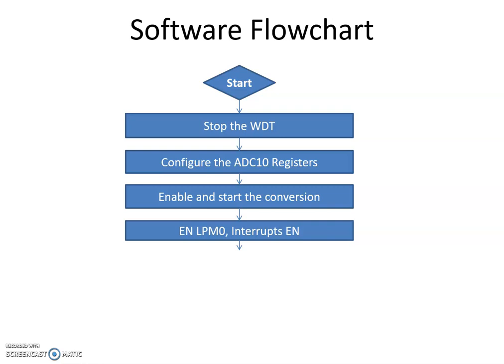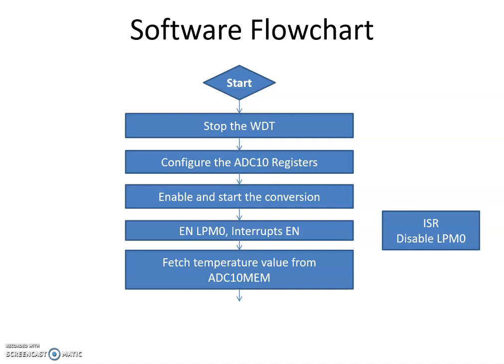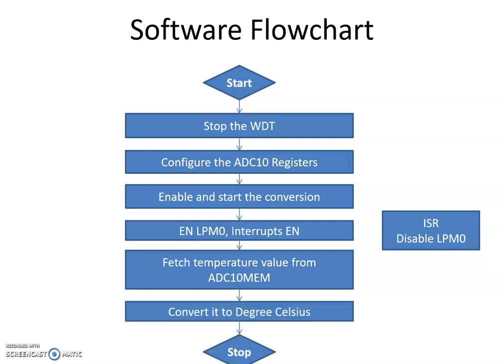Once you enable the interrupt, after the value is written into the ADC10 MEM register, the ADC interrupts your controller and you go to the ISR. Within the ISR we are not doing anything except disabling the low power mode. All calculations should be kept in the main program — you should not put much in the ISR. Simply fetch the temperature value from the ADC10 MEM register, convert it into degrees Celsius, and that's it.